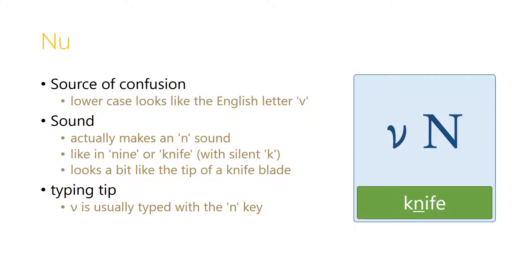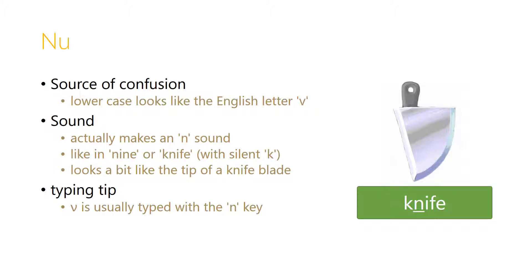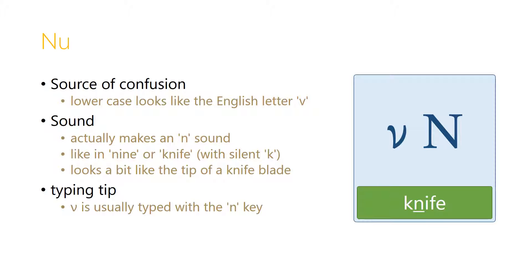The letter Nu is confusing because the lowercase Nu looks like an English letter V, but as the uppercase suggests, this letter actually makes an N sound, like in 'nine' or 'knife,' if we remember the silent K. The lowercase Nu looks a little bit like the tip of a knife blade, and so if we remember that the lowercase Nu looks like a knife, that'll help us remember that it makes the N sound. The Nu is usually typed with the N key.